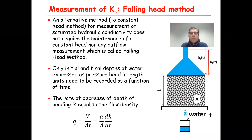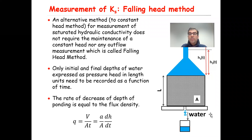In this lecture, I'm going to talk about the falling head method that is used to measure saturated hydraulic conductivity of soil. This is part of our bachelor level course on groundwater hydrology. In the previous lecture, we talked about the constant head method. An alternative to the constant head method is the falling head method.